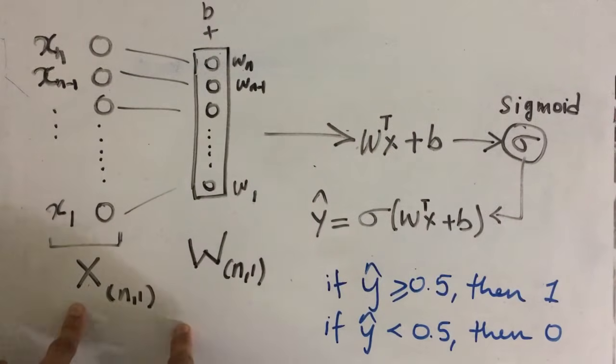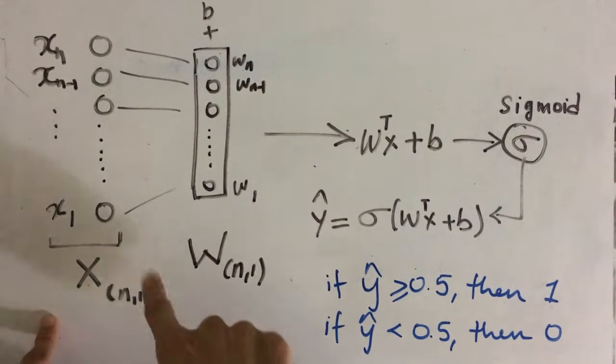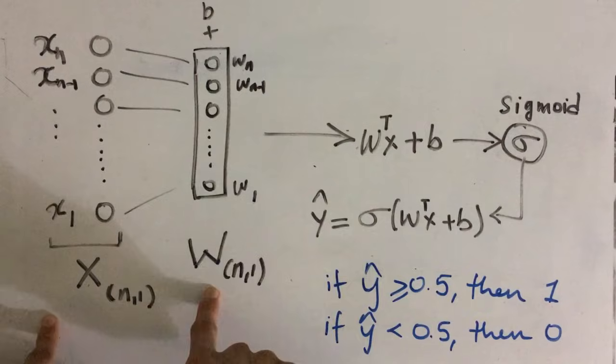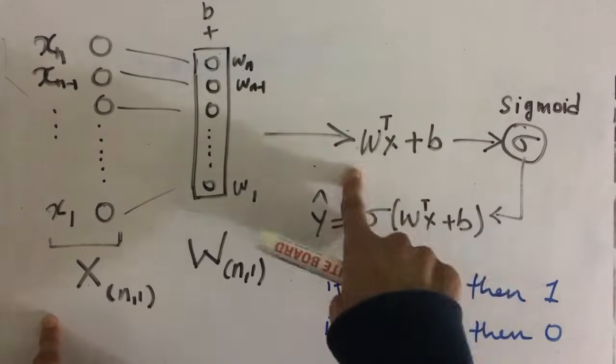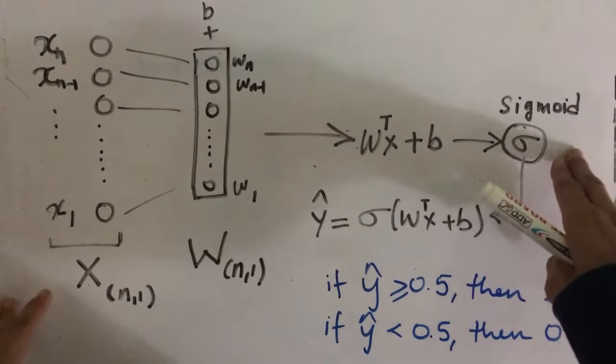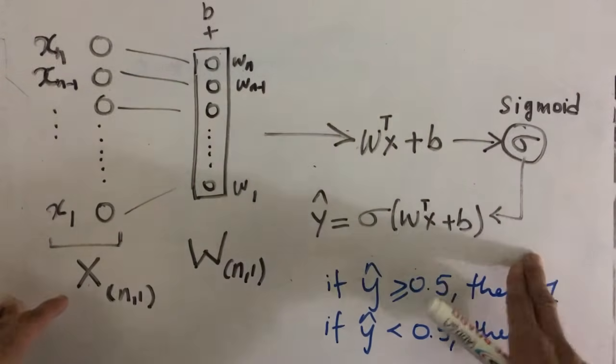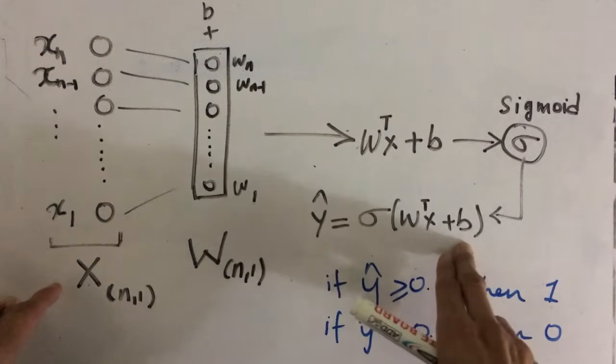So x will be represented in the form of matrix of all the input features which will be multiplied with w transpose and summation with b to get our w transpose x plus b. Now this will then pass to our sigmoid curve which will give our final predictions.